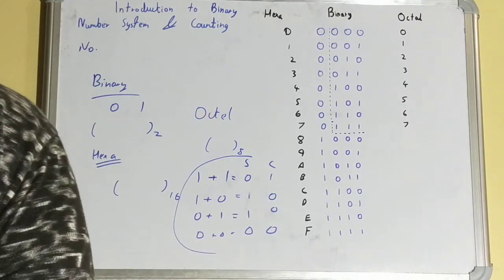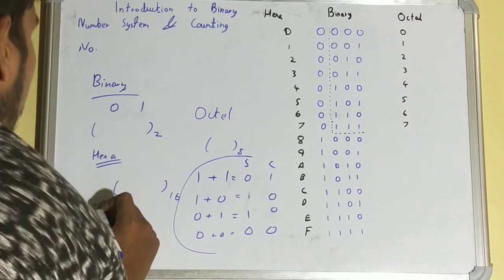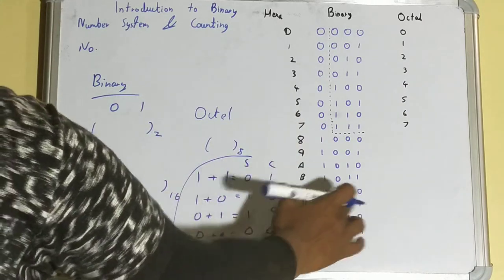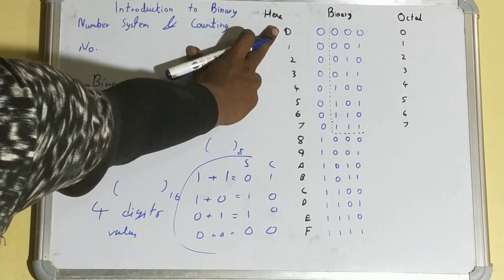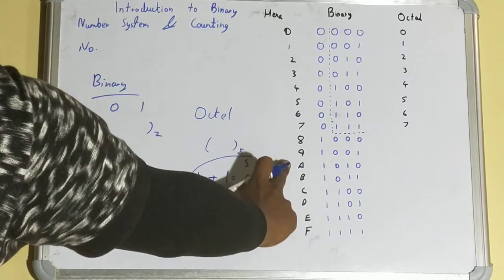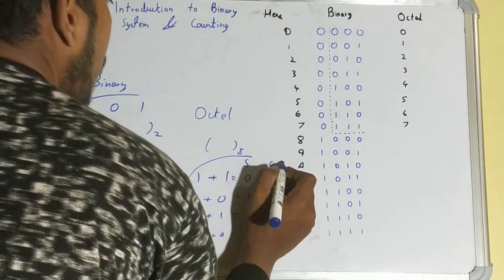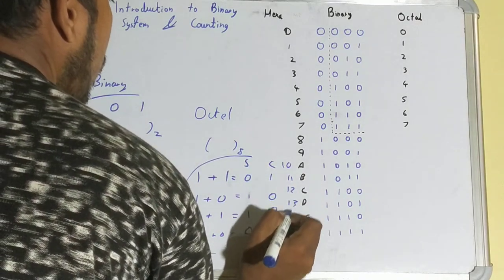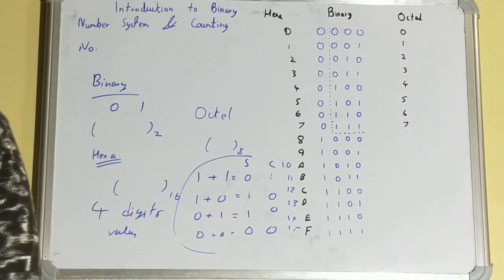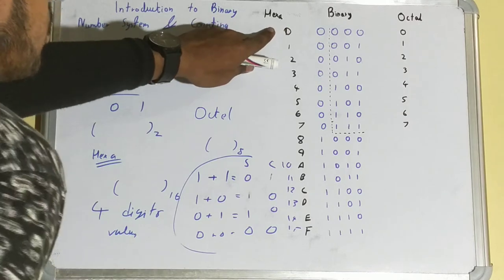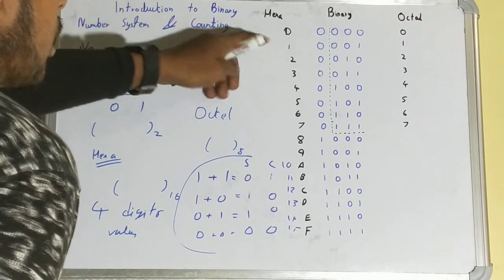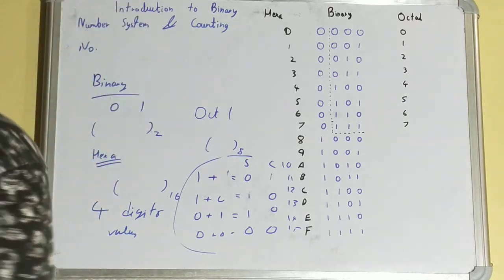Hexadecimal uses four-digit binary values, so the table you see is suitable for hexadecimal. The hexadecimal values go from 0 to 9 just like normal counting, but from 10 through 15 we write A, B, C, D, E, F respectively. That is the only difference — otherwise it matches general counting. Zero in hexadecimal is represented as four zeros, and so on.